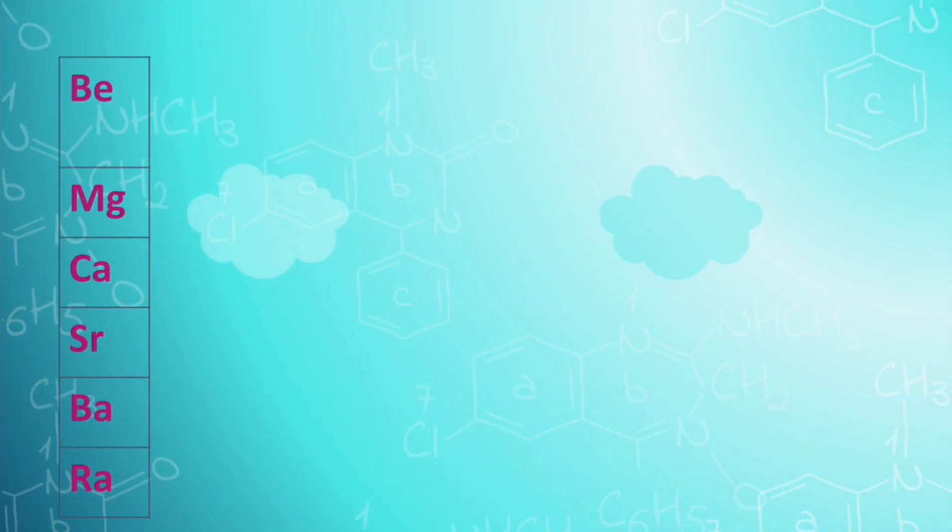Second group elements are Beryllium, Magnesium, Calcium, Strontium, Barium, and Radium. The memorized trick for this is, Beta Mange Car Scooter Bap Raji.